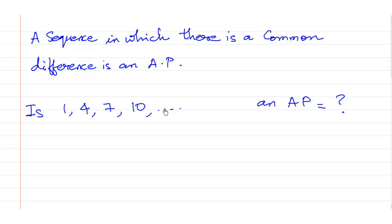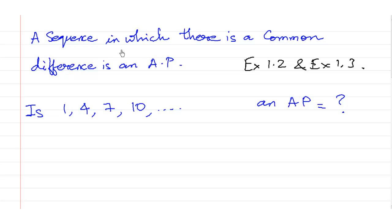We are going to understand exercise 1.2 and exercise 1.3 in this video. We are going to understand what is meant by arithmetic progression. A sequence in which there is a common difference is called an arithmetic progression. In order to understand what a common difference is and how we determine whether 1, 4, 7, and 10 form an AP, let us look at this example.